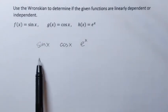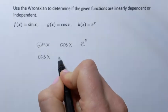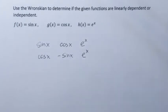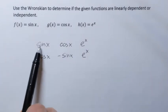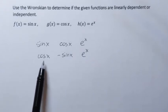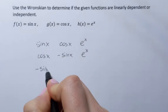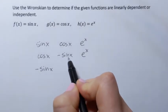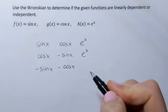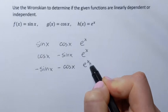The second row will be the first derivatives of those functions. So derivative of sine is cosine, derivative of cosine is negative sine, and then derivative of e to the power x is the same thing. The third row will be the second derivatives — derivatives of derivatives. Derivative of cosine is negative sine; derivative of negative sine is negative cosine of x. And again, derivative of e to the power x is e to the power x. That is the matrix.